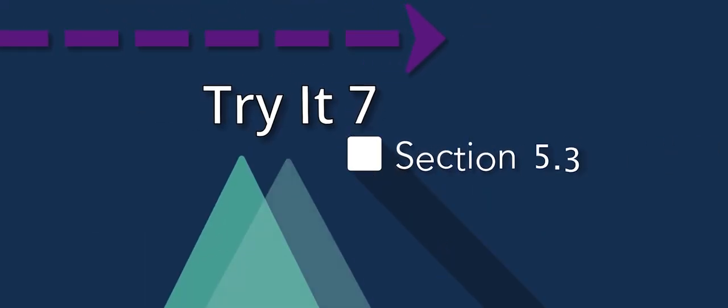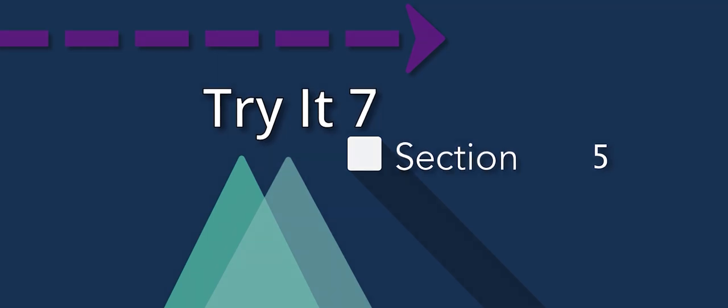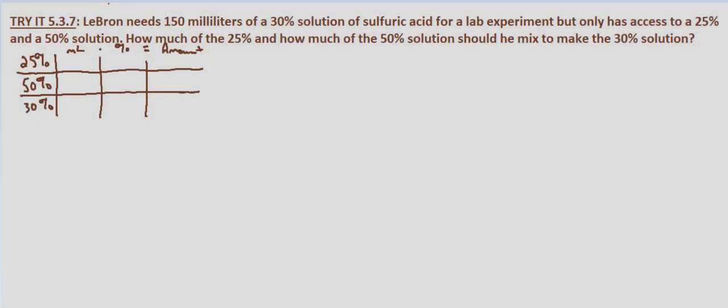In this problem we're told that LeBron needs 150 mL of a 30% solution of sulfuric acid for a lab experiment, but only has access to a 25% and a 50% solution. We're asked how much of the 25% and how much of the 50% solution should he mix to make the 30% solution.